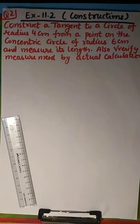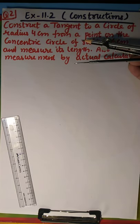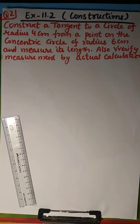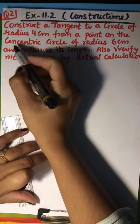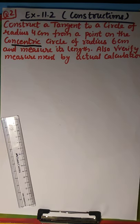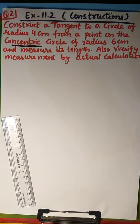Here I have statement, construct a tangent to a circle of radius 4 cm from a point on the concentric circle. From a point on the concentric circle of radius 6 cm and measure its length.